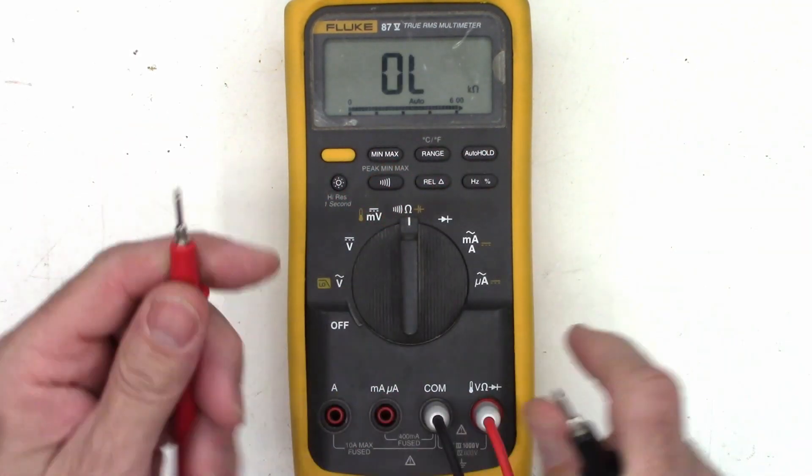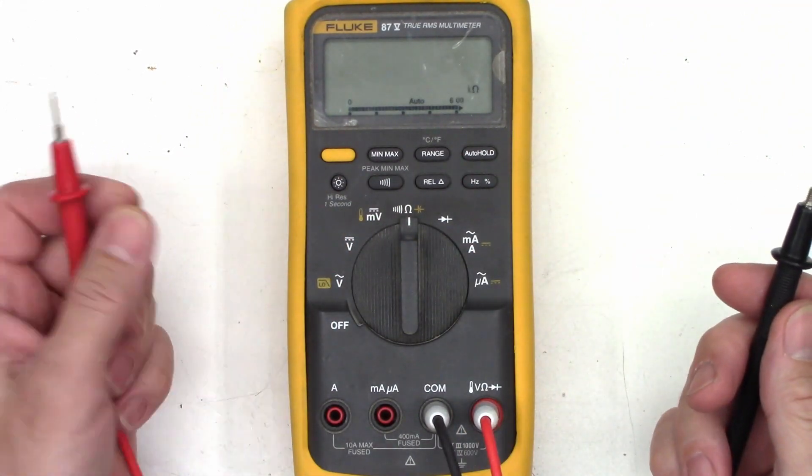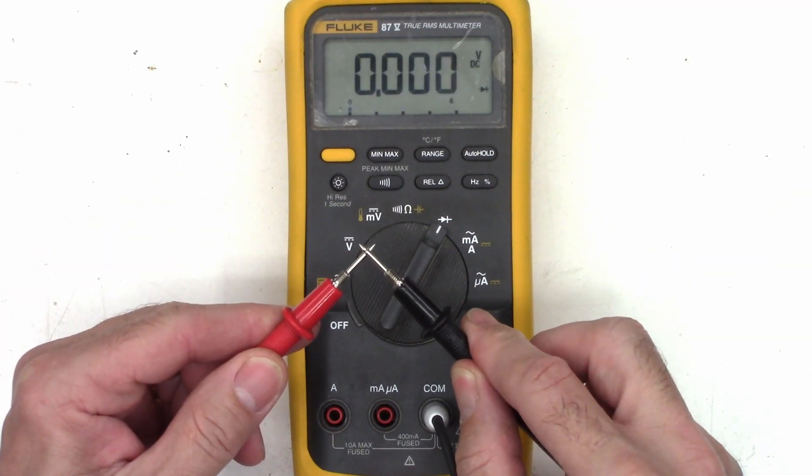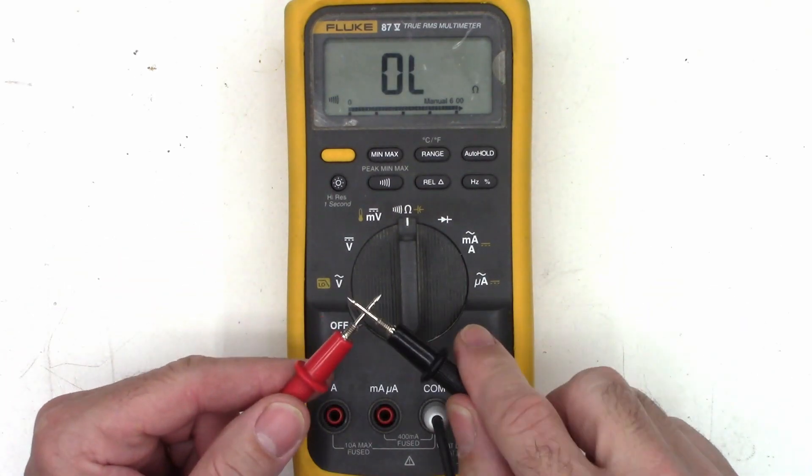However, if I go to ohms and I short it, I get 0.2 ohms. That's perfectly fine. Diode range, perfectly fine. Continuity, good.